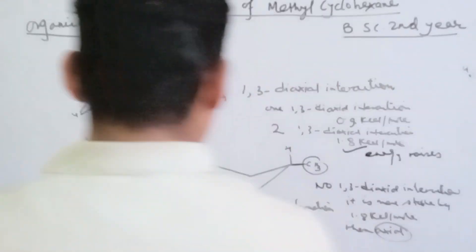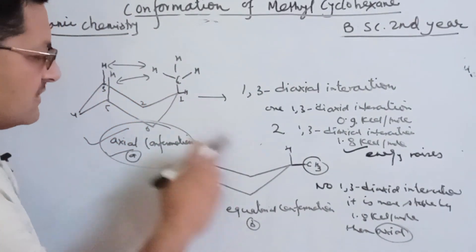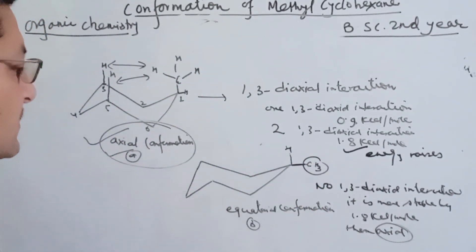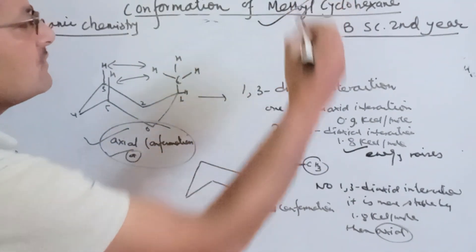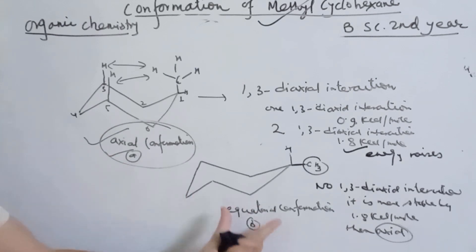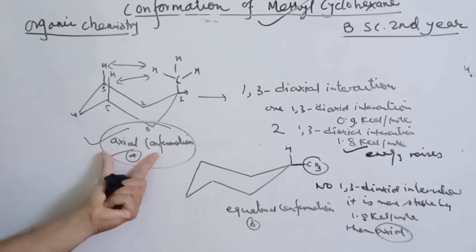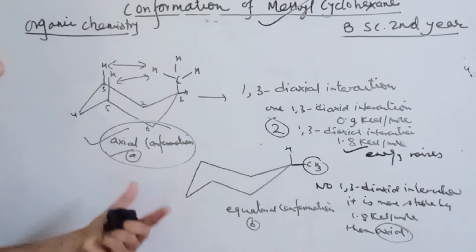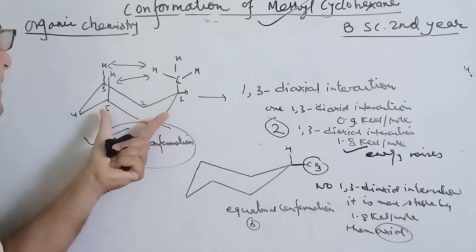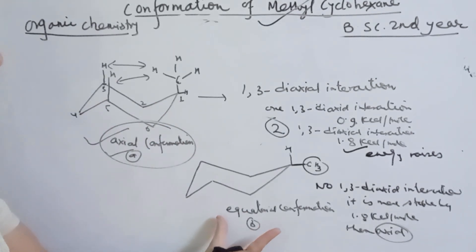So, there are other 1,3-diaxial interactions. This actually has two conformations. The axial conformation has more energy and is less stable. The 1,3-diaxial interaction raises energy, making it unstable, while the equatorial conformation is more stable.